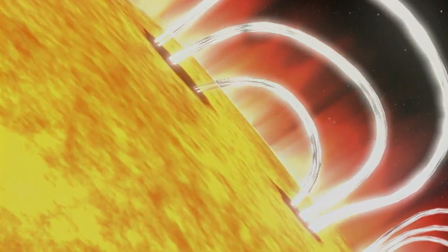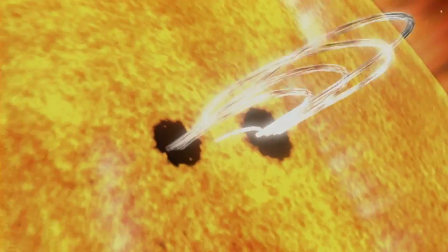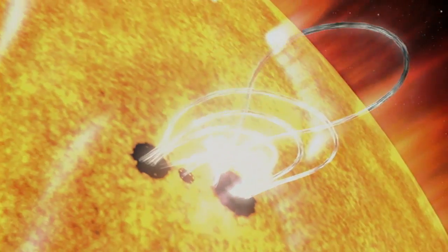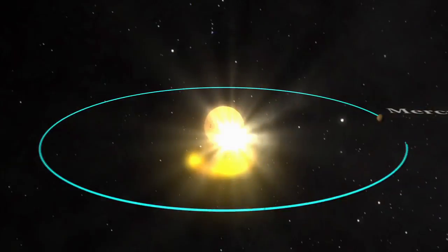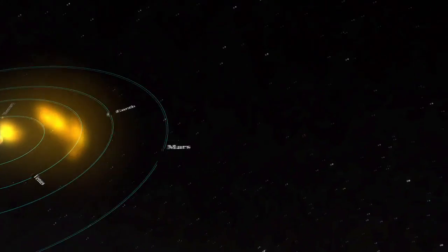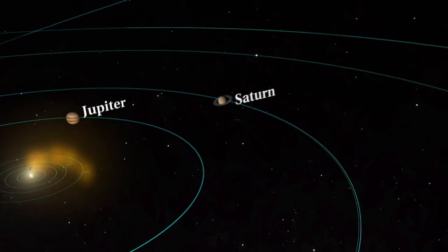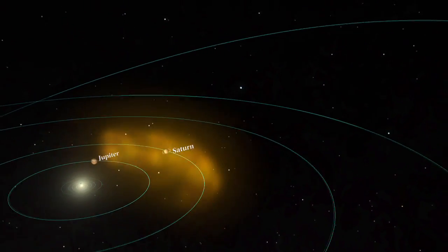The number of sunspots is important because sunspots are the visual markers of where powerful magnetic fields have emerged from the Sun's interior. These magnetic fields power solar flares and coronal mass ejections, which can affect Earth and other objects in the solar system. As the sunspots increase, so does the frequency and severity of flares and CMEs.